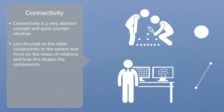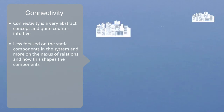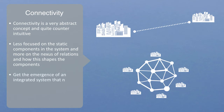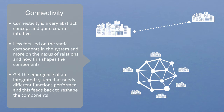With technology network analysis, we're asking how the technology component is created by the network. At a certain level of connectivity, we stop asking how the components create the connections, and things become flipped around as we start to ask how the network creates the components, or at least their properties. When the level of integration is high enough, and the cost of interaction low enough, there will be very many interactions, as we get the emergence of an integrated system that needs different functions performed, and this feeds back to reshape the components. This is quite abstract, so we'll take some examples to solidify it.